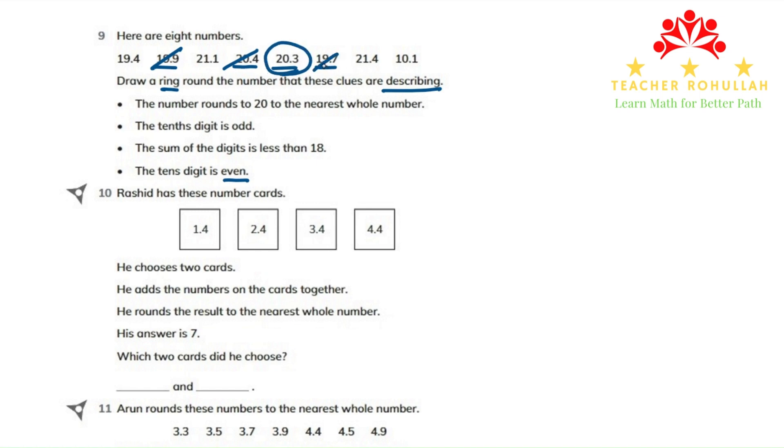19.7 is also crossed because the tens digit over here is 1, and it is not even. So the correct number is 20.3. We are done with question number 9. Now we move down to question number 10.